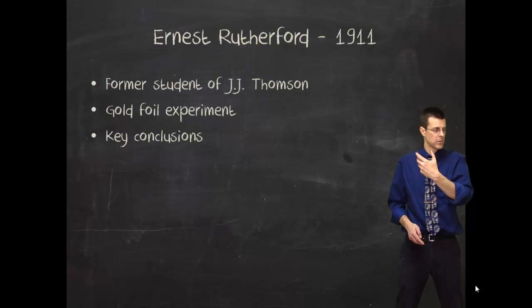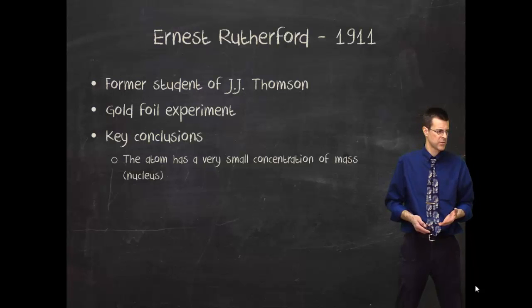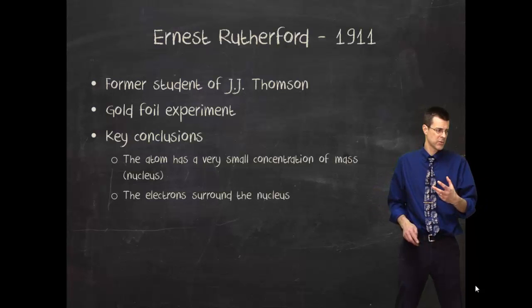And that new model is the, well, let's go to the key conclusions first, that the atom has a small concentration of mass. So a lot of mass in small space, and that the electrons are around the nucleus. So instead of all the electrons being embedded into the atom, they're around the atom.